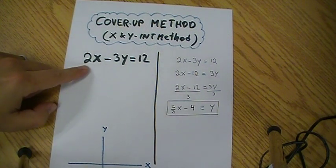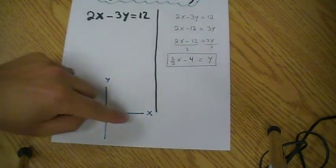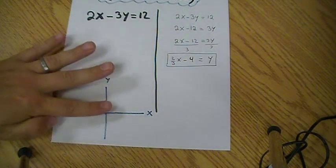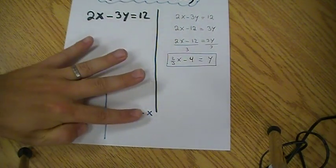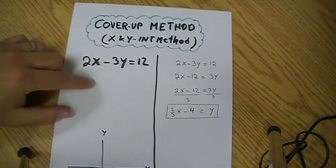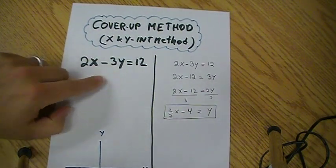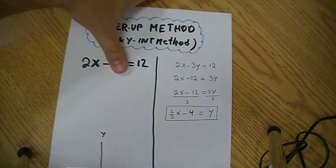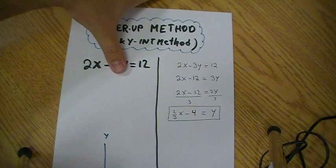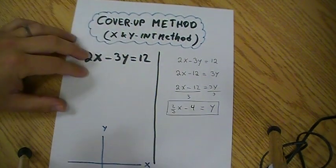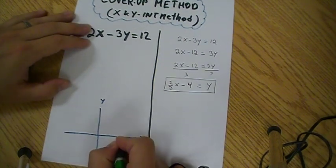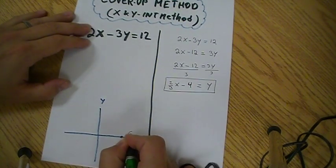Basically, if we're looking for the x-intercept, we know that at the x-intercept, the y-value for this will be 0, because that's the height at the x-intercept. So if the y is 0, I'm going to cover this up, and I'm going to say 2x is equal to 12. If 2x is equal to 12, then I know that x is equal to 6. So I'm going to put a point here at 6.